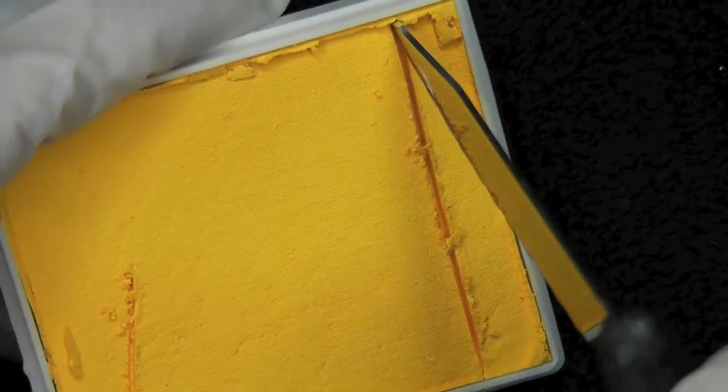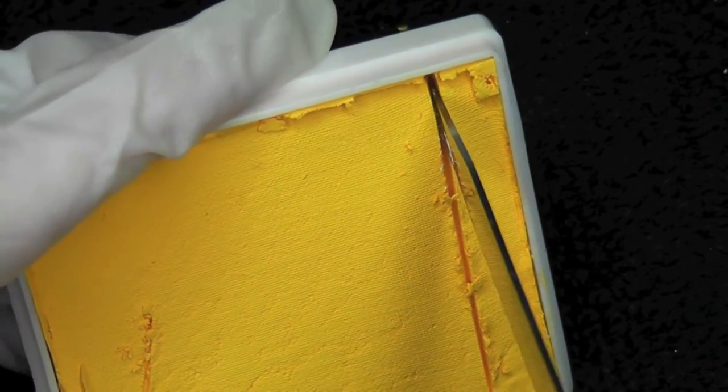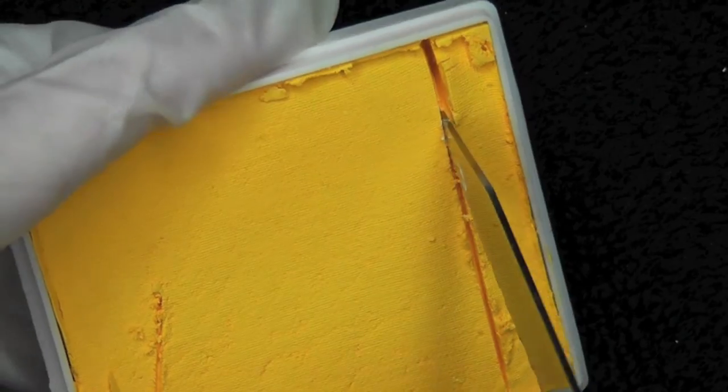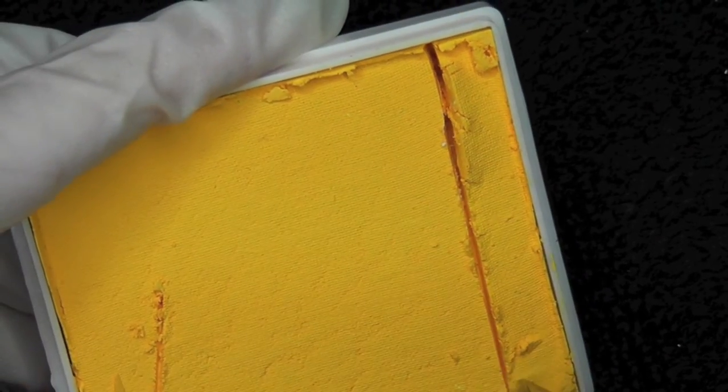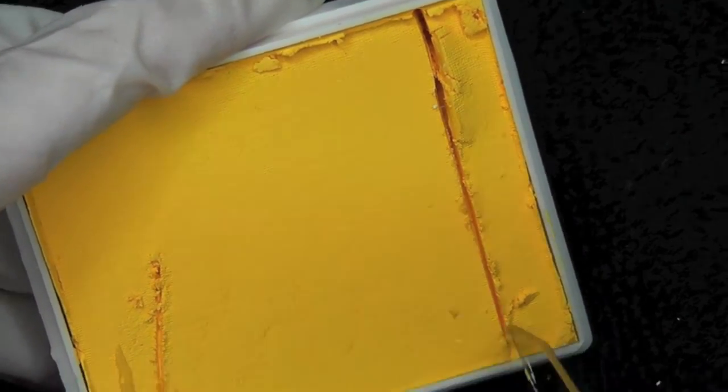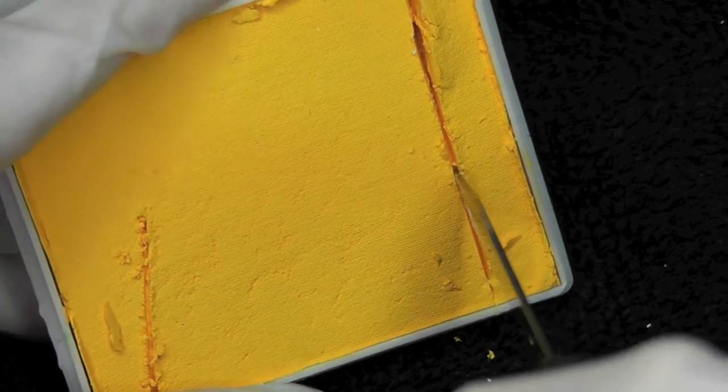So just really press in with the tip of your knife. Go ahead and push it in three or four times just to get a really good separation from the piece of face paint that you're going to be prying out.